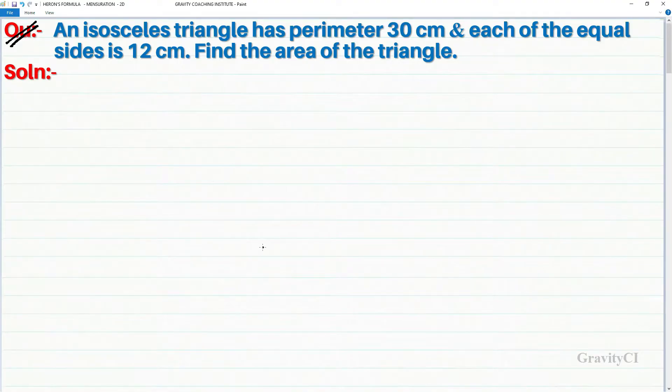Question: An isosceles triangle has perimeter 30 centimeter and each of the equal sides is 12 centimeter, so find the area of the triangle. To solve this question, the isosceles triangle has perimeter given as 30 centimeter and the equal side is 12 centimeter, so we will find this triangle's area.